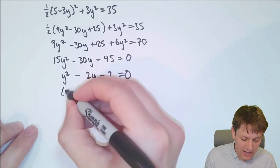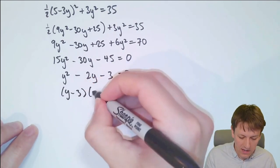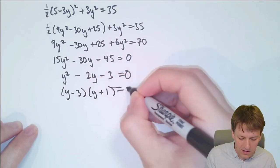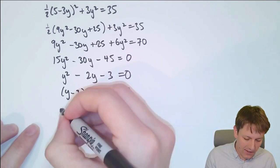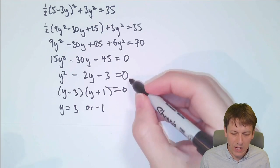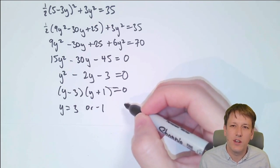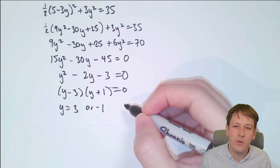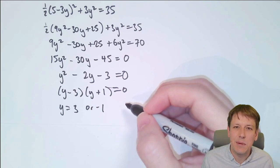I can now factorise this to get y minus 3 times y plus 1 equals 0, and that gives me that y is equal to either 3 or minus 1. If you're not sure how that bit works, look up solving quadratic equations or factorising quadratic equations.